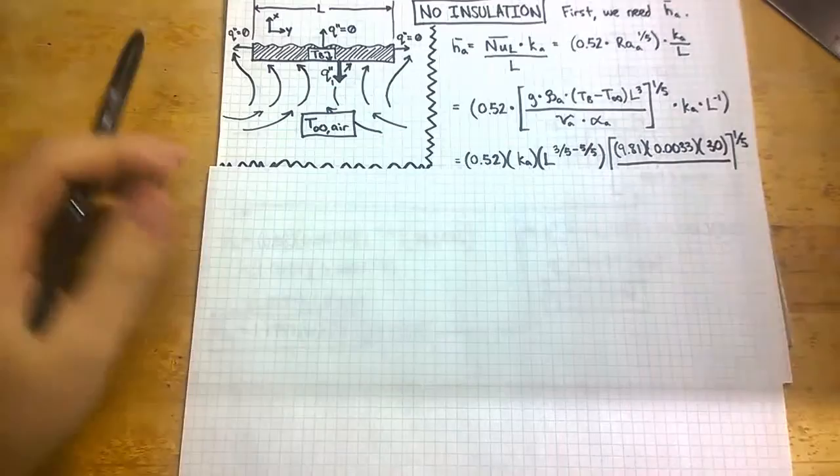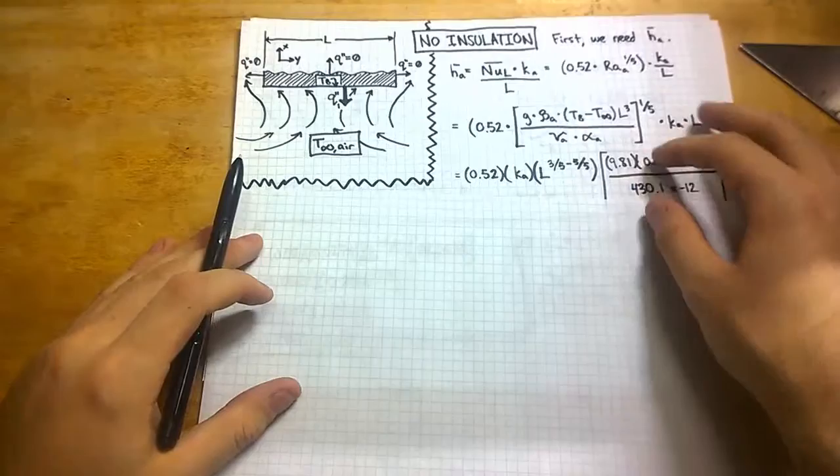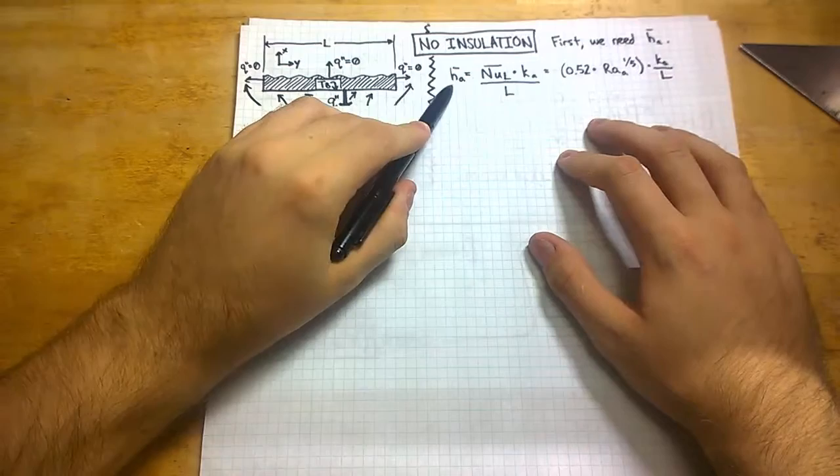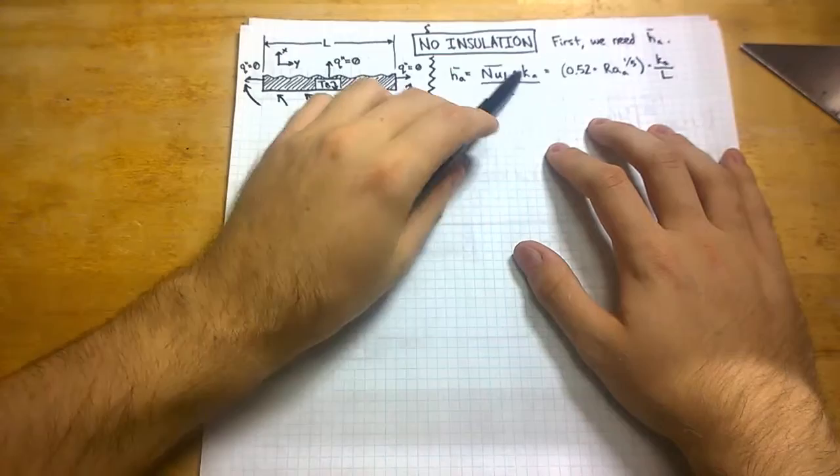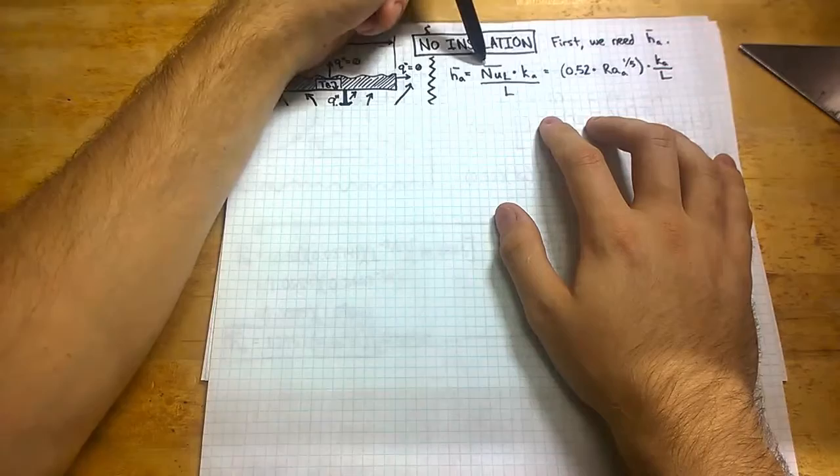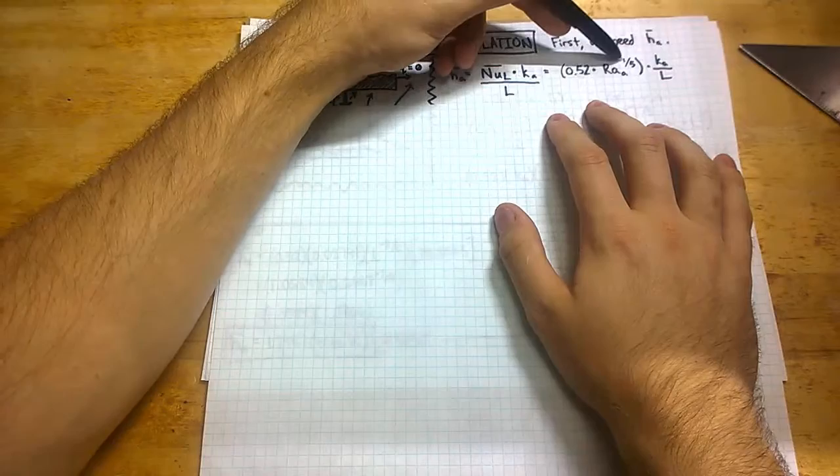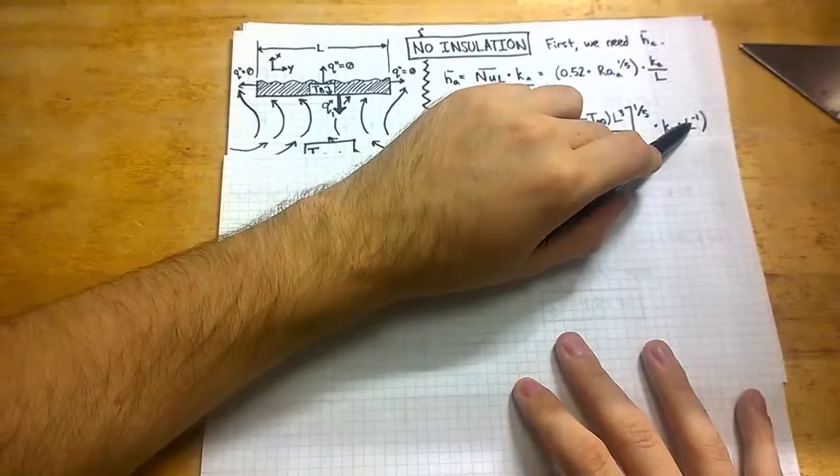So our first situation is we have our print bed, which has no insulation currently. And we need to first find the average convective coefficient for air. The convective coefficient on average for air would be based on the Nusselt number of laminar flow averaged multiplied by the conductive coefficient of air divided by L, which is going to be our smallest dimension that we discussed. That is broken up even further for the Nusselt number of laminar flow on average by 0.52 times the Rayleigh number for air to the power of the fifth root. And then I've just simply moved the L dimension over here, and then again I've moved the L in this step up again and gave it that negative exponent. So don't be confused, that is just this.